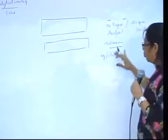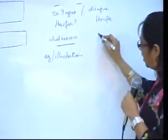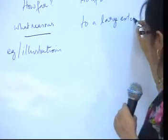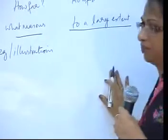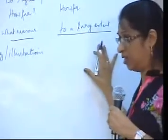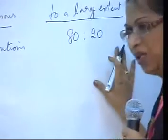So therefore I said, most often the stand you take might be where you say, I agree or disagree to a large extent. Here, if you are saying that I agree to a large extent, then your agreement will be 80 and your disagreement would be 20.